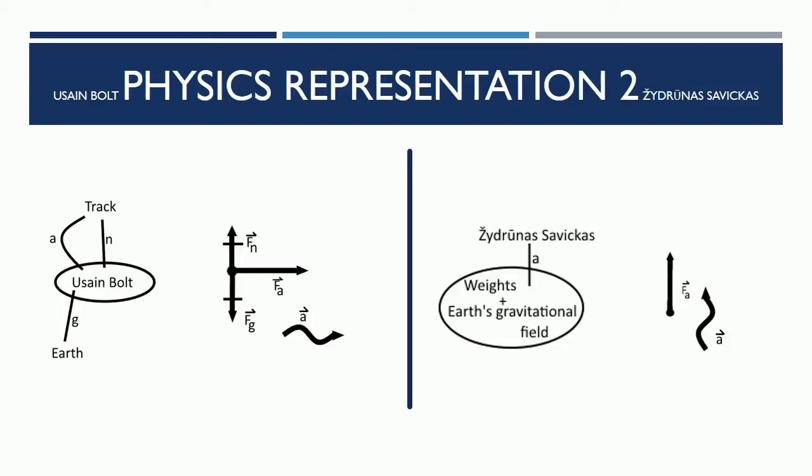Physics Representation 2: Usain Bolt has three interactions with two objects. He has two interactions with the track, applied and normal, and he has one gravitational interaction with the Earth. The force diagram shows the normal and gravitational point opposite directions with the same magnitude, so they cancel out. There is also a horizontal applied force in the positive direction.